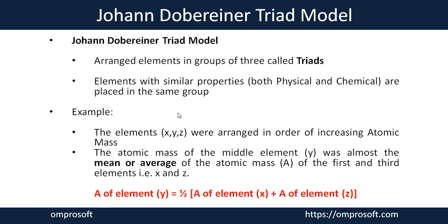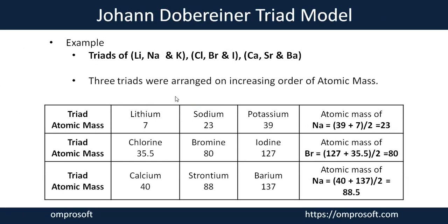By following this rule, John Döbereiner found three groups which he called triads. The first triad is lithium, sodium, and potassium; the second is chlorine, bromine, and iodine; and the third is calcium, strontium, and barium. These triads are arranged according to the increasing order of atomic mass, where the middle element has an atomic mass equal to half the sum of the first and last elements. For the first triad, lithium, sodium, and potassium have atomic masses of 7, 23, and 39.